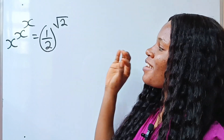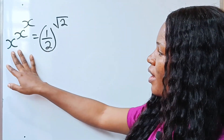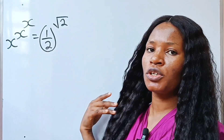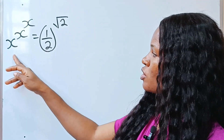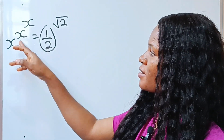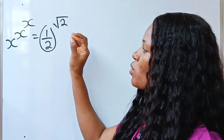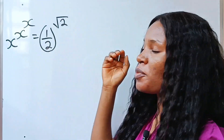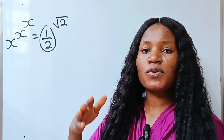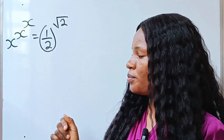Hi, let's solve for x in this equation. x to the power of x is equal to one half raised to the power of square root of 2.